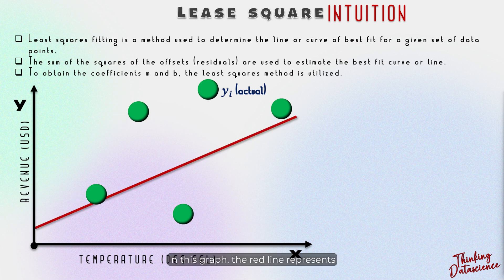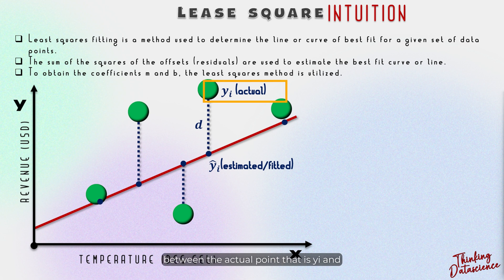In this graph, the red line represents the prediction while the blue dots indicate the estimated or predicted points. We denote the estimated as y-hat, which means it is a guess or a prediction. To evaluate the model's performance, we calculate the error or the residual, which is the difference between the actual point yi and the predicted point y-hat i. We refer to this difference as the offset or the error distance and denote it as d.